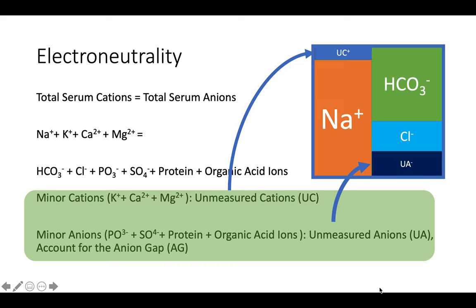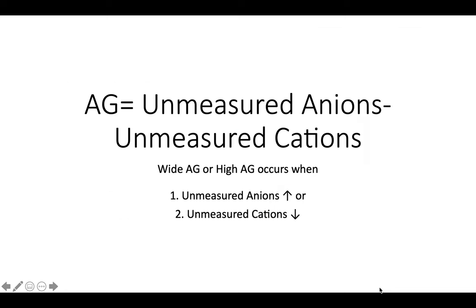Total serum cations — sodium, potassium, calcium, magnesium — should equal total serum anions: bicarbonate, chloride, phosphate, sulfates, proteins, and organic acid ions. In practice, only some cations and anions are measured. The main measured cation is sodium; other unmeasured cations exist in small amounts. The major measured anions are bicarbonate and chloride; minor unmeasured anions include phosphate, sulfates, and negatively charged proteins, which account for the anion gap.